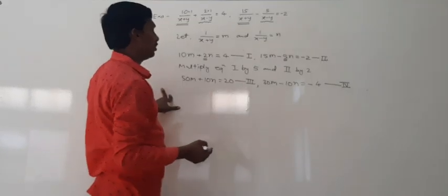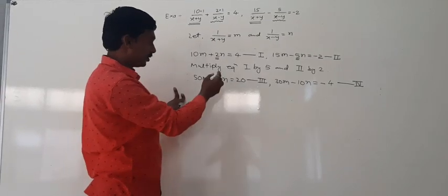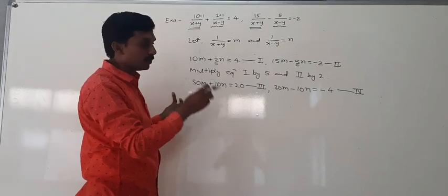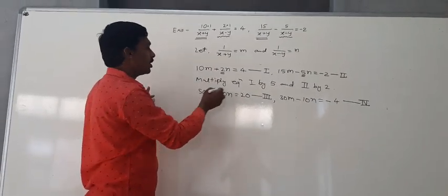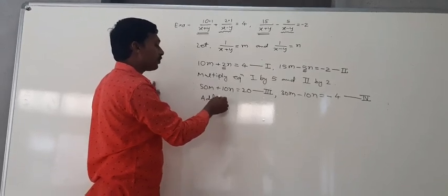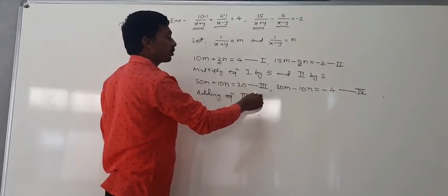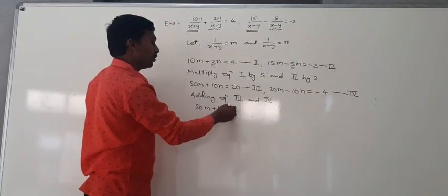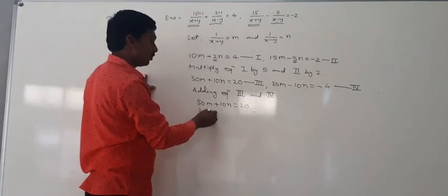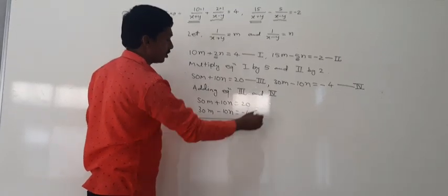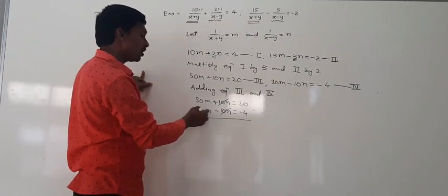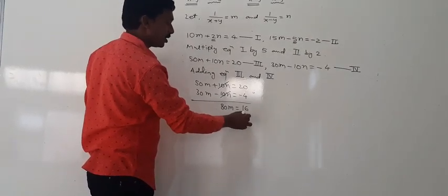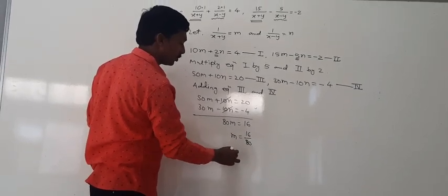Now adding equations 3 and 4, the n terms cancel: plus 10n and minus 10n are eliminated. We get 50m plus 30m equals 80m, and 20 minus 4 equals 16. So 80m equals 16, and m is equal to 16 upon 80, which simplifies to 1 upon 5.